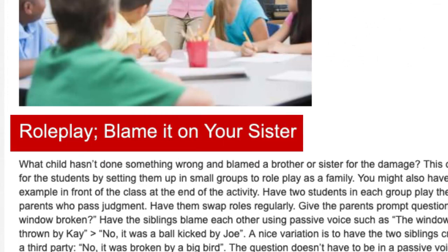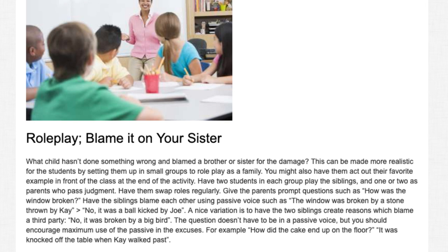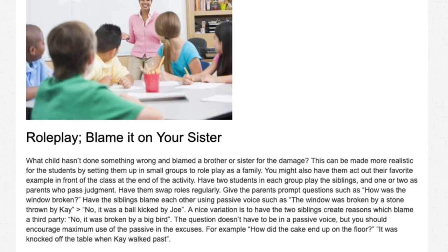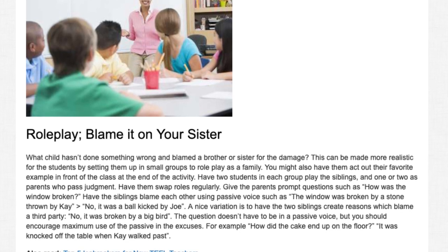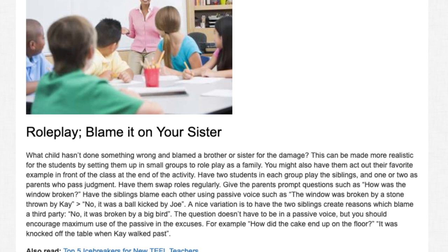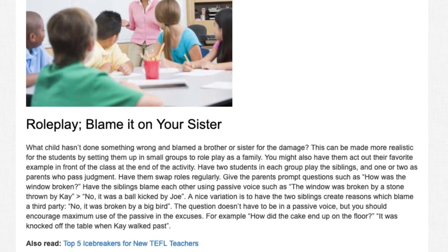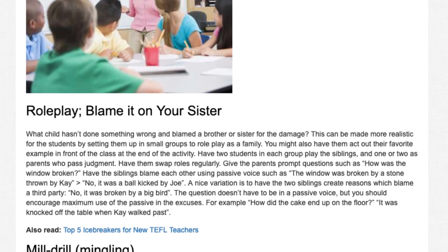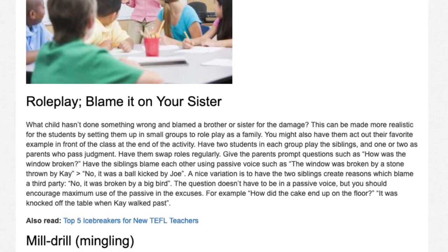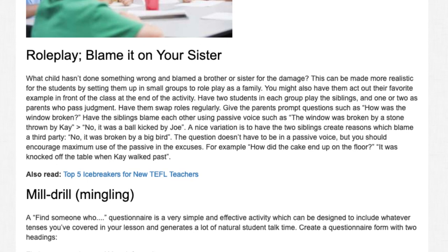Role Play — Blame It on Your Sister: What child hasn't done something wrong and blamed a brother or sister for the damage? This can be made more realistic by setting students up in small groups to role play as a family. You might also have them act out their favorite example in front of the class at the end of the activity. Have two students in each group play as siblings and one or two as parents who pass judgment. Have them swap roles regularly. Give the parents prompt questions such as 'How was the window broken?' Have the siblings blame each other using passive voice: 'The window was broken by a stone thrown by Kane.' 'No, it was a ball kicked by Joe.' A nice variation is to have the two siblings create reasons which blame a third party: 'No, it was broken by a big bird.' The question doesn't have to be in passive voice, but you should encourage maximum use of the passive in the excuses. For example: 'How did the cake end up on the floor?' 'It was knocked off the table when Kay walked past.'